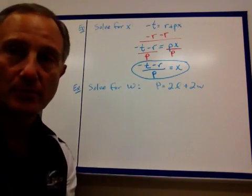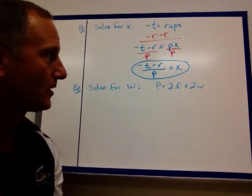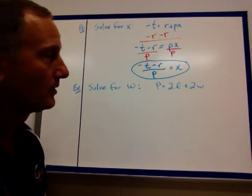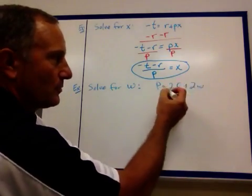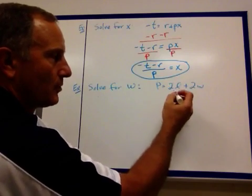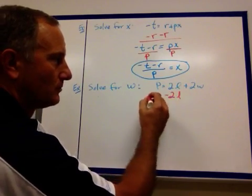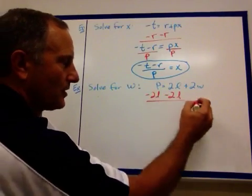Twice the length plus twice the width. If we want to solve this for w, what do we do? First thing we want to do is, like we've been talking about all along, is there any addition and subtraction to our w? Yeah. We have a plus or a positive 2l. So, I'm going to subtract 2l and I'm going to subtract it from both sides.